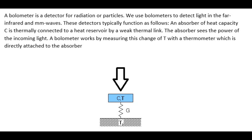A bolometer is a detector for radiation or particles. We use bolometers to detect light in the far infrared and millimeter waves. An absorber of heat capacity C is firmly connected to a heat reservoir by a weak thermal link. The absorber receives the power of the incoming light, and the bolometer works by measuring the change in temperature with a thermometer directly attached to the absorber. We use a metal where the change in temperature is proportional to the resistance.